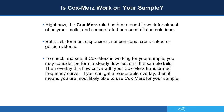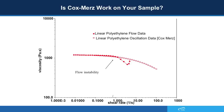To check and see if Cox-Merz is working for your sample, you may consider performing a steady state flow test until the sample fails. Then overlay this flow curve with your Cox-Merz transformed frequency sweep curve. If you can get a reasonable overlay, then it means you are most likely able to use Cox-Merz for your sample.